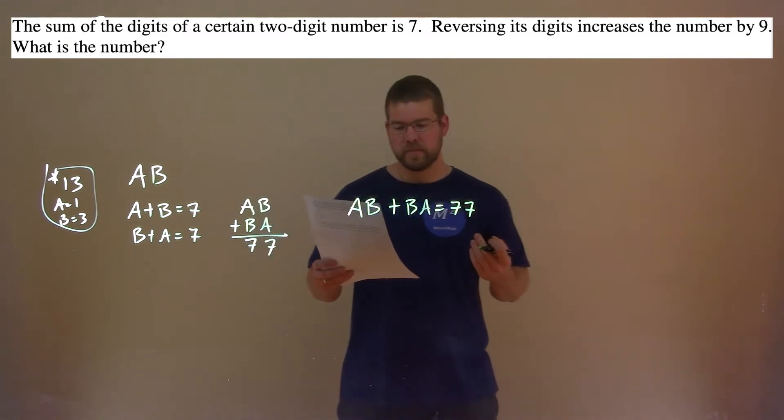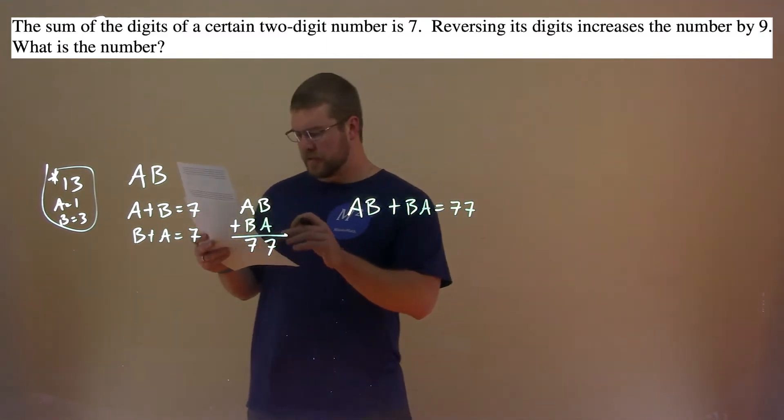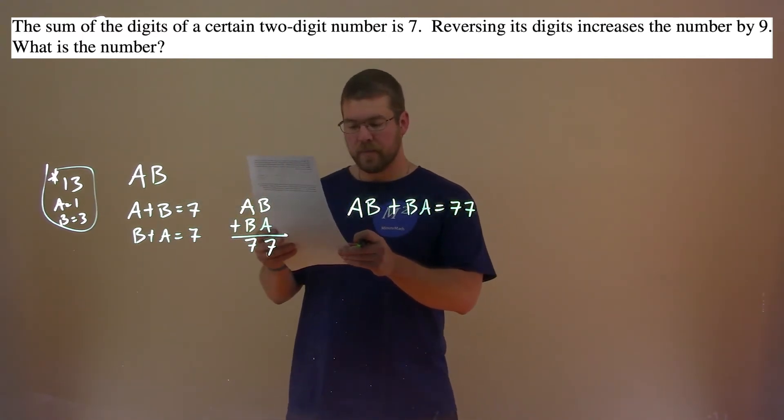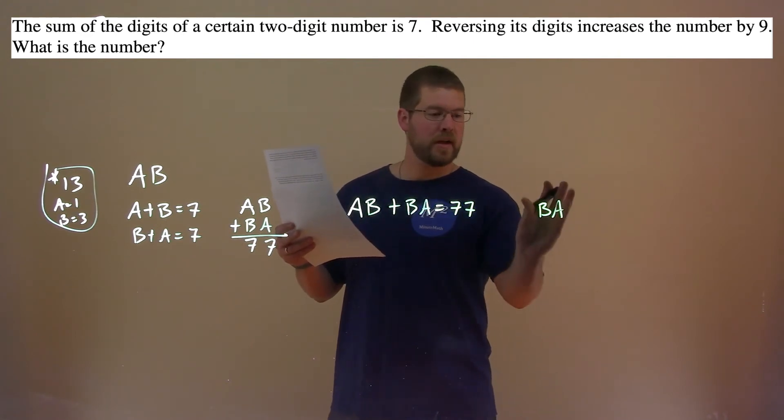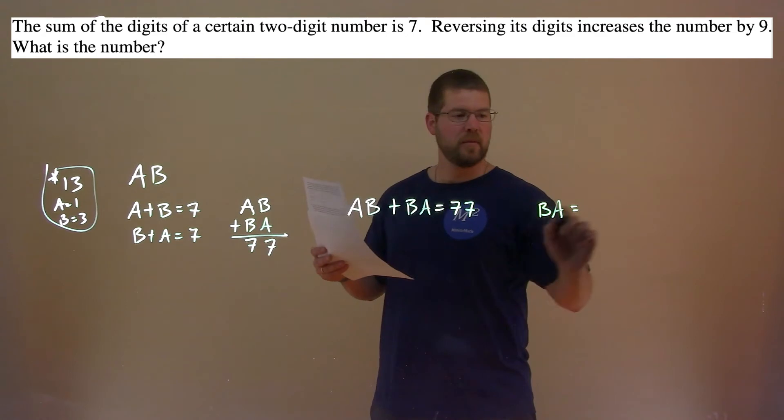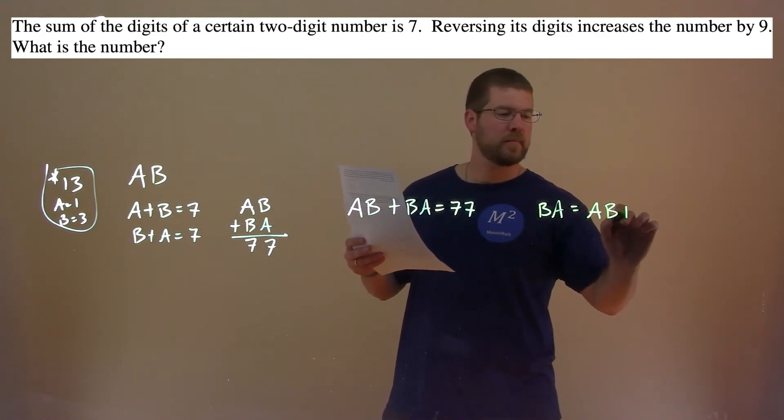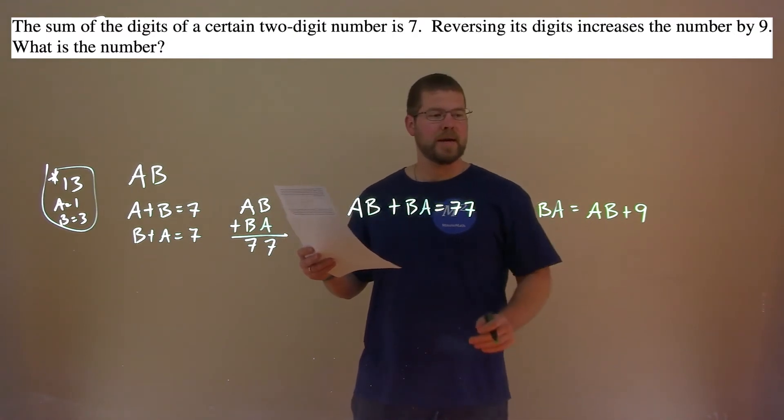What do we also know? They said reversing the digits increases the number by 9. So that BA, whatever that number is, when we reverse the digits, equals AB plus 9. We reverse the digits, we increase the number by 9.